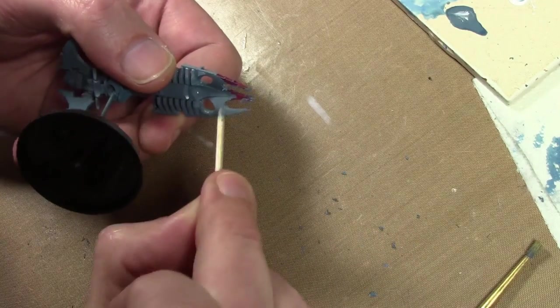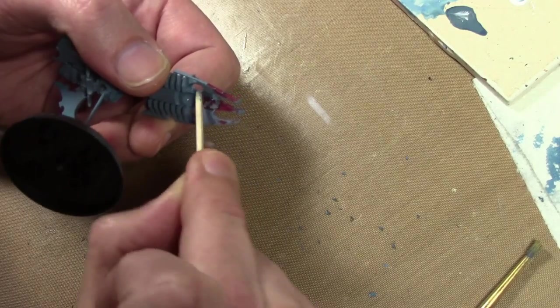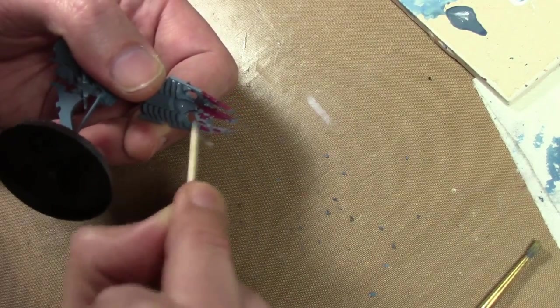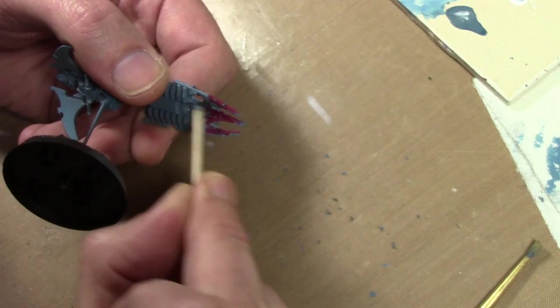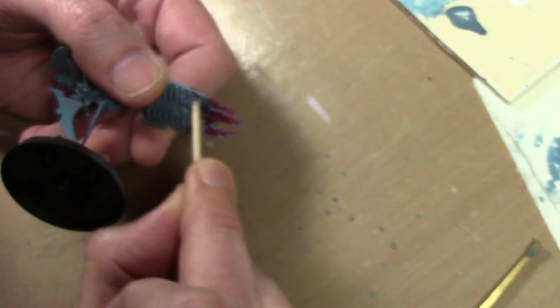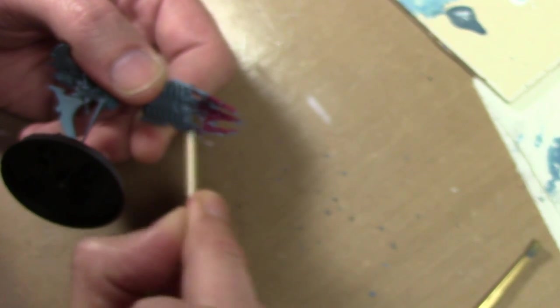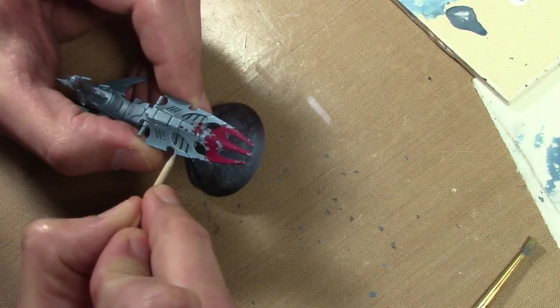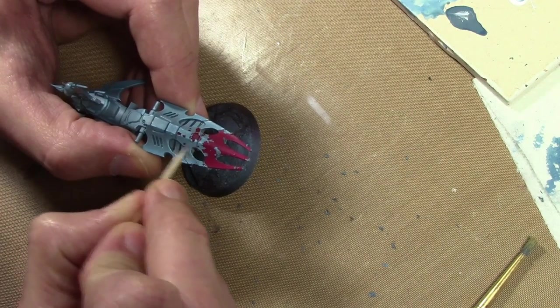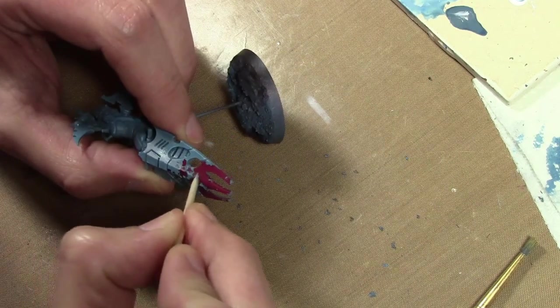And since I was going for a sort of wasteland feel to these guys, a lot of rust and what have you, I decided to use the red but apply it as if it were rust. So it's kind of a blending of two techniques here. I'm doing it to add color, but I'm doing it in a rust pattern. And it also kind of sort of looks like blood too.